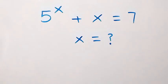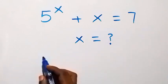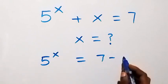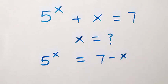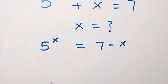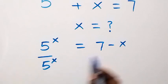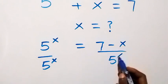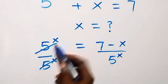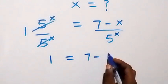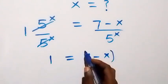Hello, you're welcome. Here we solve this nice algebra equation. We take x to the right side, and we have 5 raised to power x equals 7 minus x. From here we can divide both sides by 5 raised to power x, and 5 raised to power x cancels each other, so we have 1 on this side, and 1 equals 7 minus x.